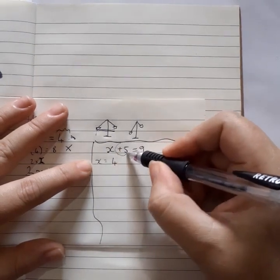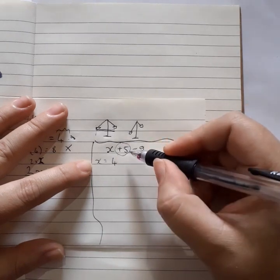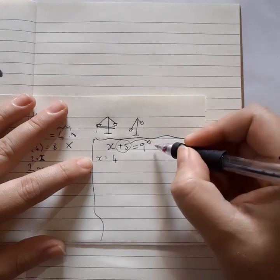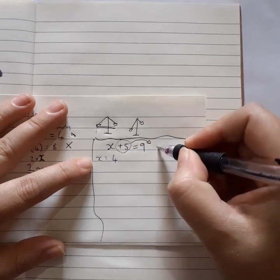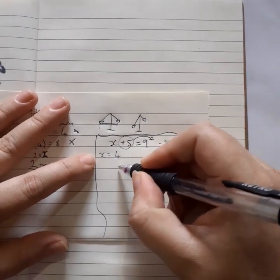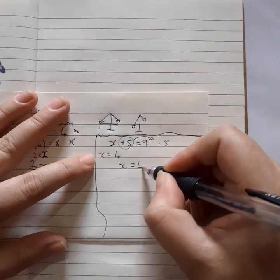We took this 5. It's plus on the one side. So we want to get it away. So we move it over to the other side of the equation. And it becomes minus. So a plus becomes a minus. So then we've got x equals 9 minus 5 is 4.